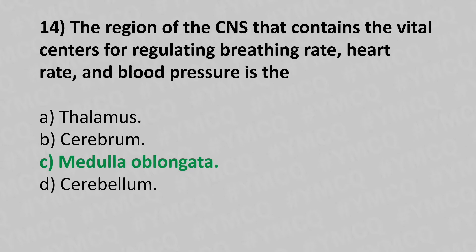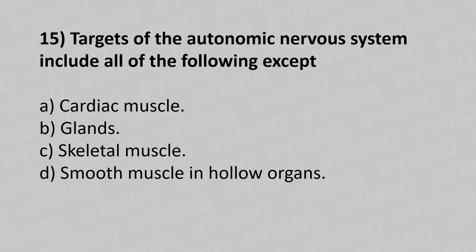Question 15: Targets of the autonomic nervous system include all of the following EXCEPT — Option A: cardiac muscle. Option B: glands. Option C: skeletal muscle. Option D: smooth muscles in the hollow organs. The answer is Option C — skeletal muscle.